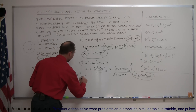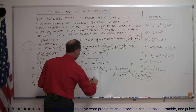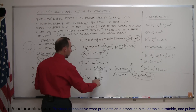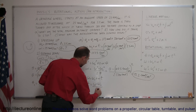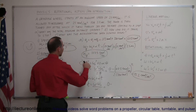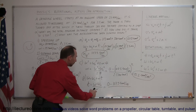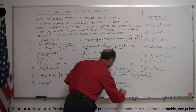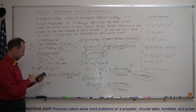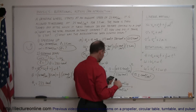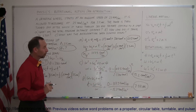Now for part B: since we now have the acceleration, the only unknown in omega equals omega-initial plus alpha t is time. Solving for time: t equals (omega minus omega-initial) divided by alpha. Final omega is zero, initial omega is 107.5 radians per second, divided by negative 15.2 radians per second squared. Using a calculator, that gives 7.07 seconds — the time for the wheel to come to a complete stop after power is turned off.